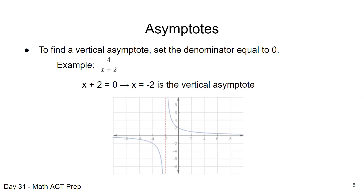That is our vertical asymptote. If we graph it, you'll notice the red dashed line at x equals negative 2 — that is our vertical asymptote. The graph approaches it but does not touch it.